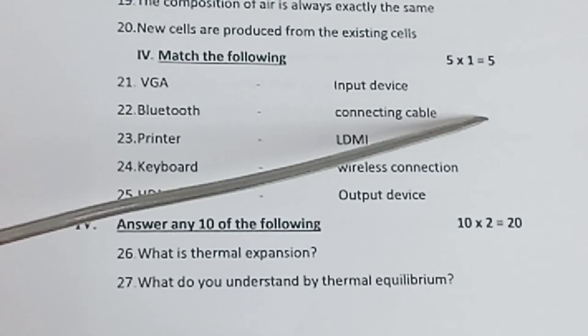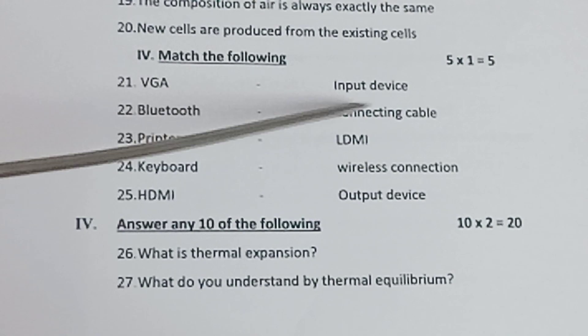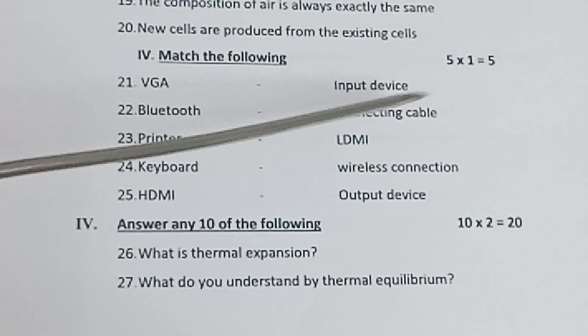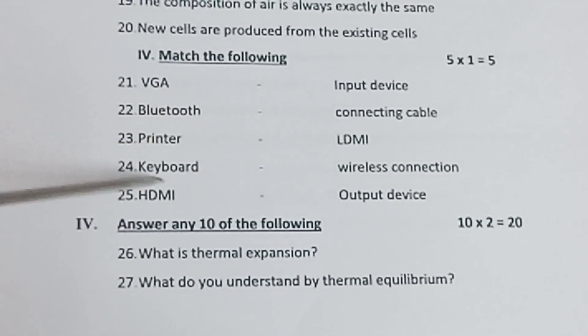Section 4: Match the following, 5 into 1 is equal to 5. Question 21: VGA - input device. Question 22: Bluetooth - connecting cable. Question 23: Printer - HDMI. Question 24: Keyboard - wireless connection. Question 25: HDMI - output device.